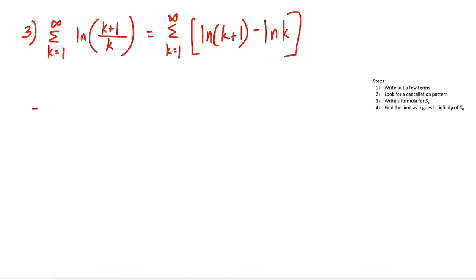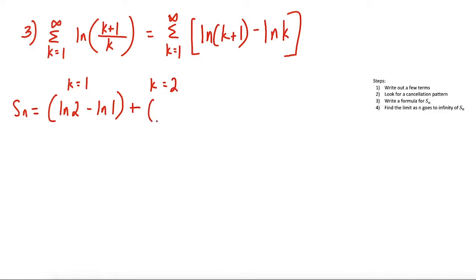Now that it's in this form, we write out the first few terms for the sum of the first n terms. At k equals 1, we have natural log of 2 minus natural log of 1. At k equals 2, we have natural log of 3 minus natural log of 2. So the first term and the last term cancel here — natural log of 2 cancels natural log of 2.